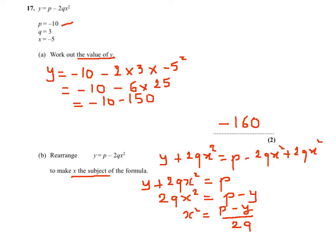Now x squared equals p minus y over 2q. This means that x equals plus or minus square root of p minus y over 2q. Thank you.